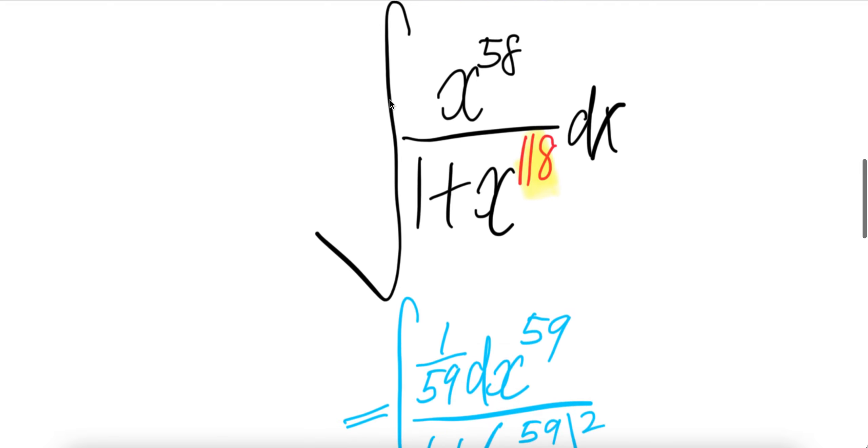Now let us push x to the power of 58 into dx. The derivative of x to the power of 59 is 59 comes down, minus 1 is x to the power of 58 dx. Cancel with this guy. So basically this is the same thing as that.